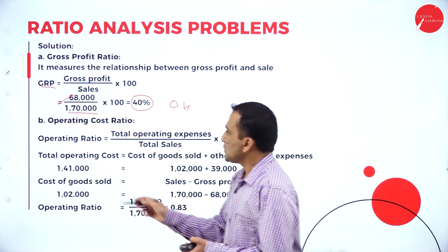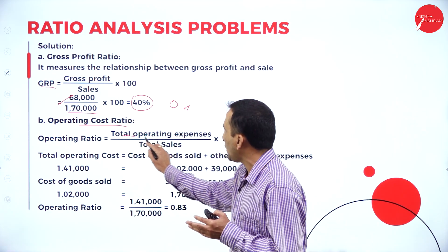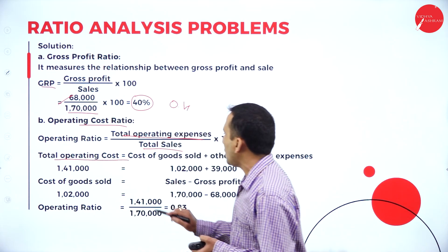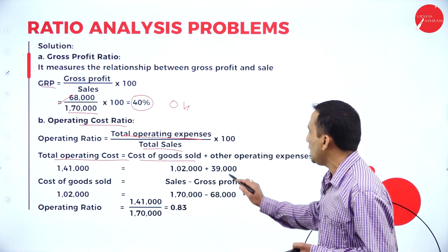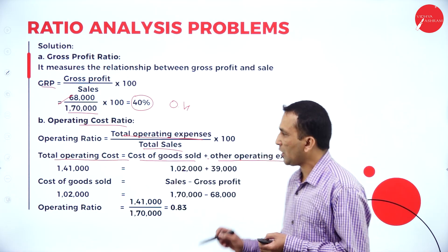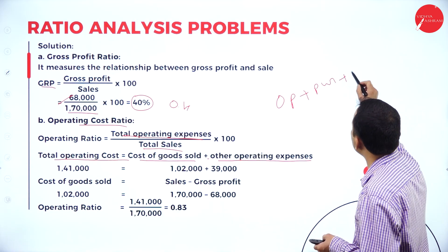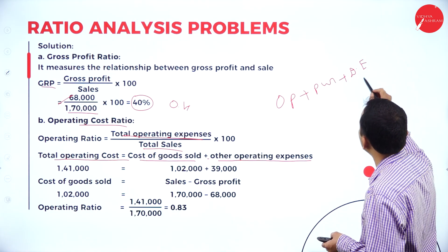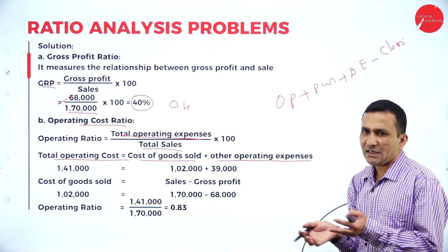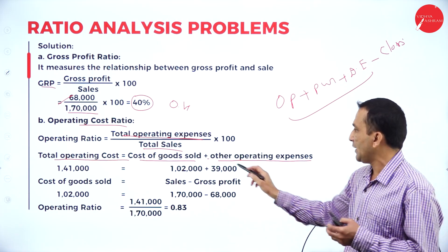Moving to the operating cost ratio, which is total operating expense divided by total sales. Total operating cost equals cost of goods sold plus other operating expenses. Cost of goods sold: opening stock plus purchases plus direct expenses minus closing stock.